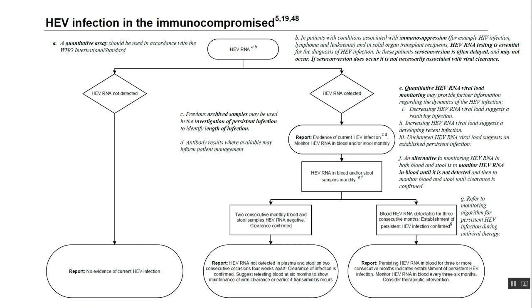An alternative to this monitoring approach is to monitor HIV RNA in blood until it is not detected, and then to monitor in both blood and stool until clearance is confirmed. So if you don't want to perform blood and stool testing together, you perform in blood until it is completely clear, and then in blood and stool.